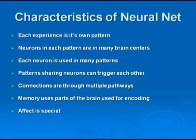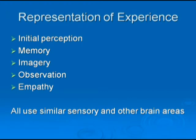The next characteristic is that memory uses the parts of the brain that are used for encoding. The example from a book — I think it's Philip Cozzolino — is an old man sitting in his chair watching a boxing match. Does he just sit there? No. He's squirming all around, ducking when everybody gets hit. Why is he squirming? Because the representation of experience uses the same systems in our brain that we would use if we were actually doing it.